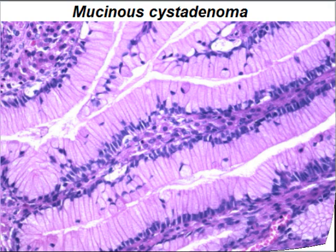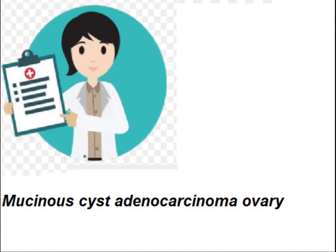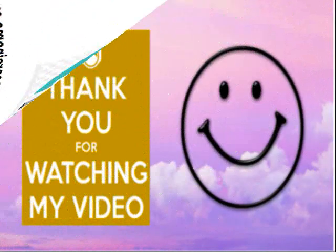When we summarize the whole information, we can say: adnexal mass in old age (60-year-old female), ascitic fluid present, multilocular partly solid mass, complex mucinous papillary structures, stratification, frequent and abnormal mitosis, pleomorphism, and stromal invasion. So we can say the name of the lesion is mucinous cyst adenocarcinoma of the ovary, because it arises from the ovary.